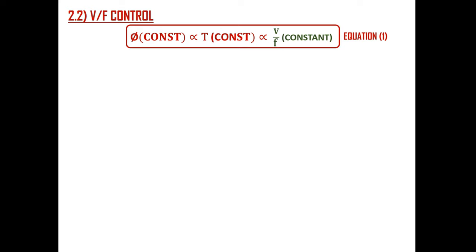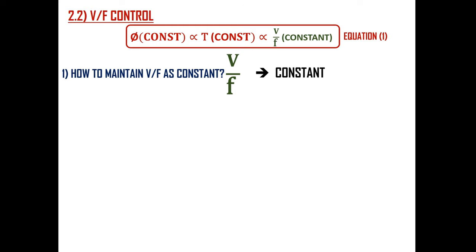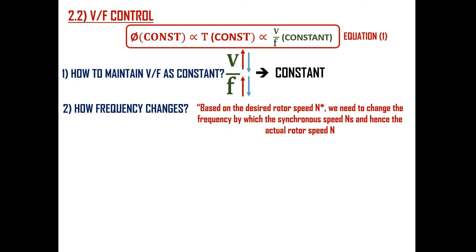Next, we will see the V/F control method, which is more common in industries. Here we maintain the flux and torque by keeping the V/F ratio constant. If we increase the frequency then we need to increase the voltage as well, and if we decrease the frequency then we need to decrease the voltage as well, so that the V/F ratio remains constant and hence torque and flux are maintained. The frequency change depends entirely on the desired rotor speed n* we want — based on that, the line frequency to the induction motor changes, which changes synchronous speed and hence actual rotor speed.